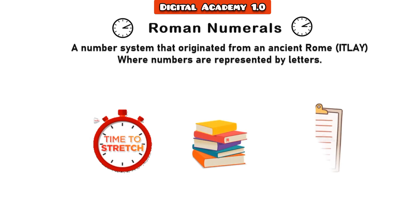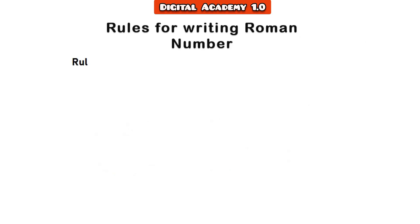Rules for writing Roman numerals. Rule one: the numerals I and X can be repeated up to three times only. For example, III for three, XX for twenty, and so on.